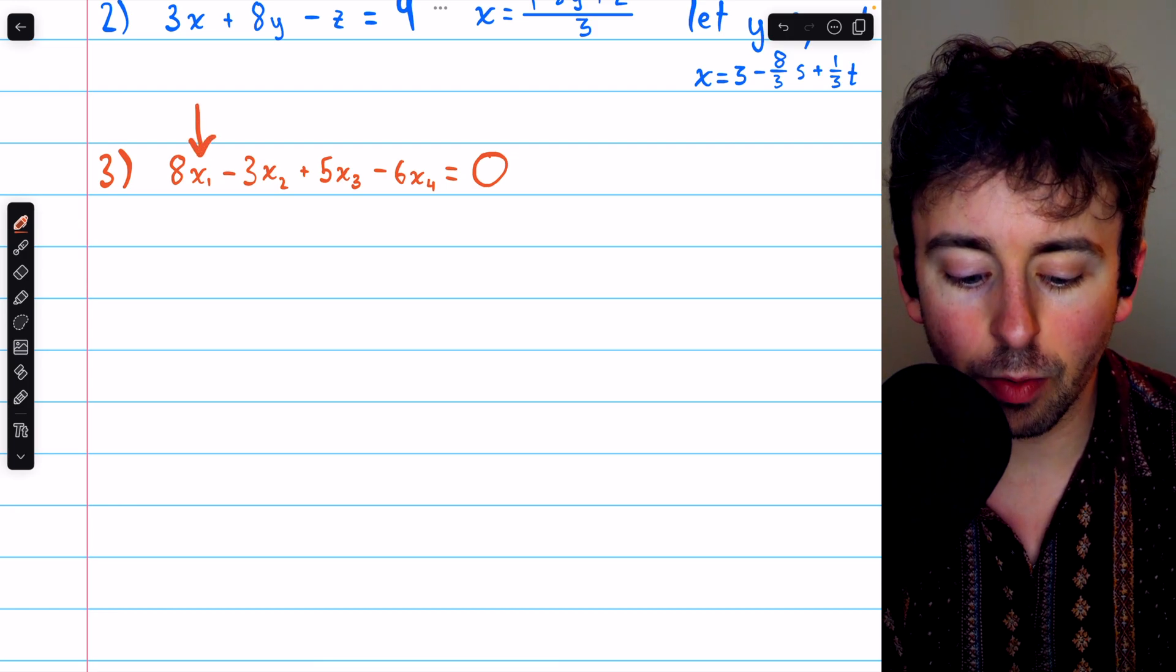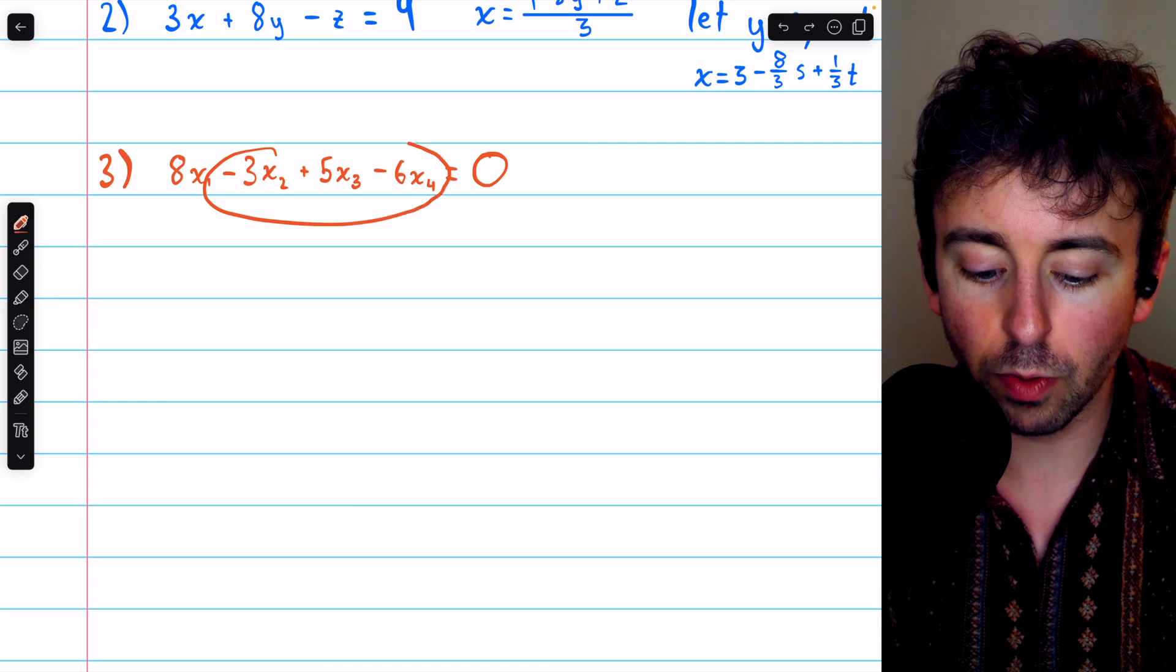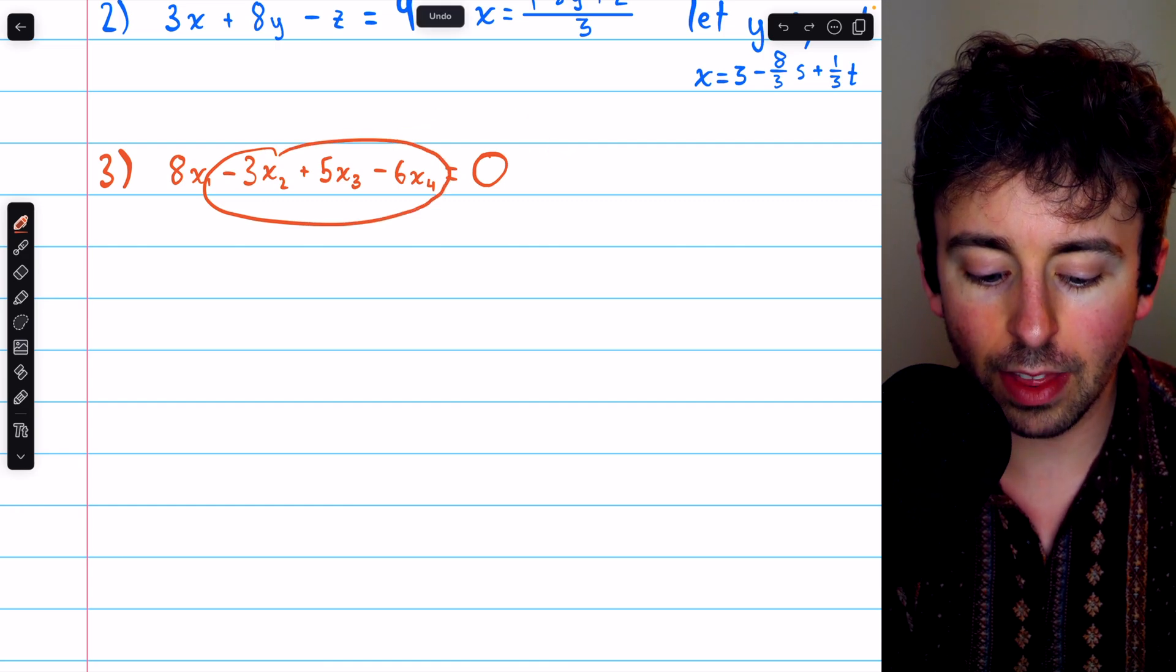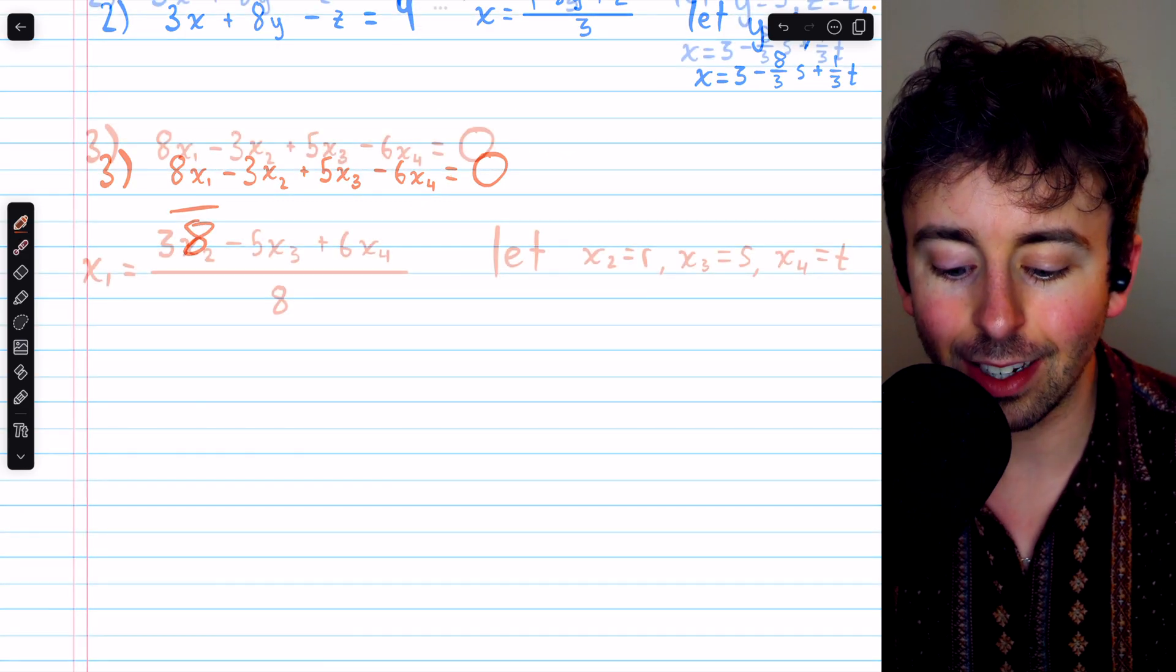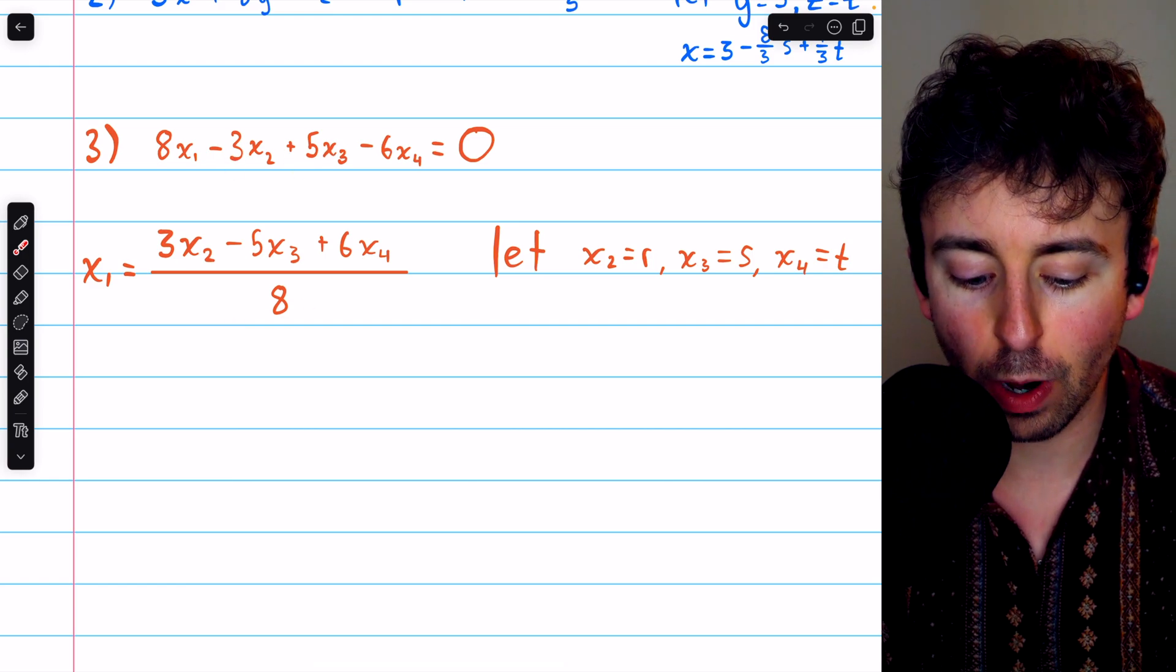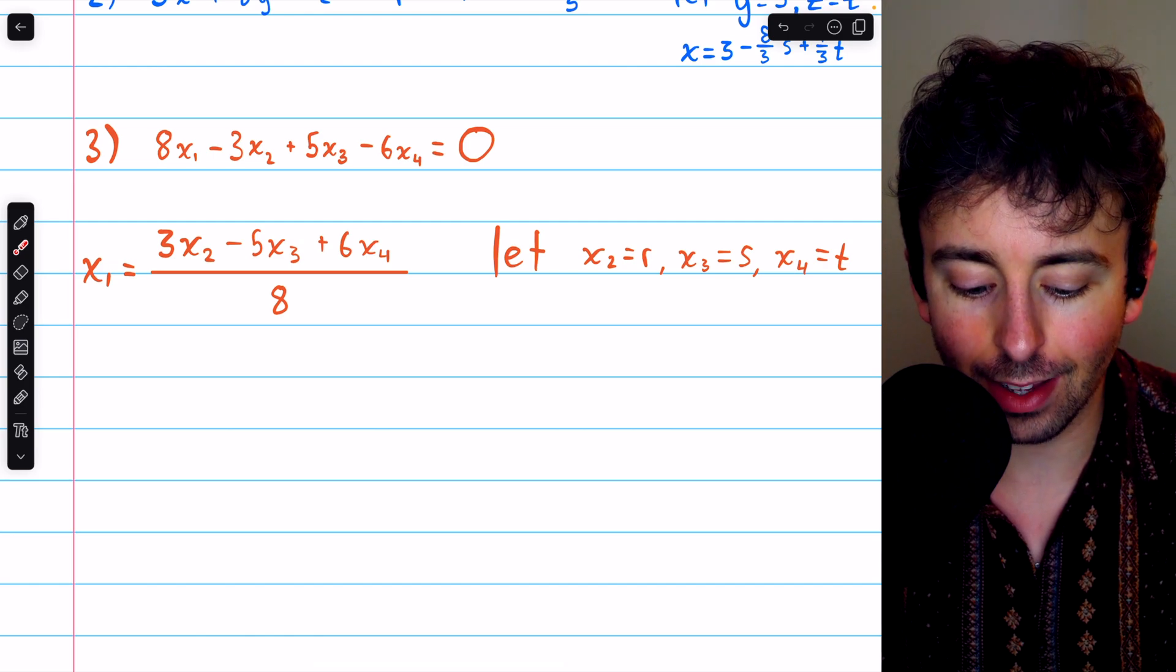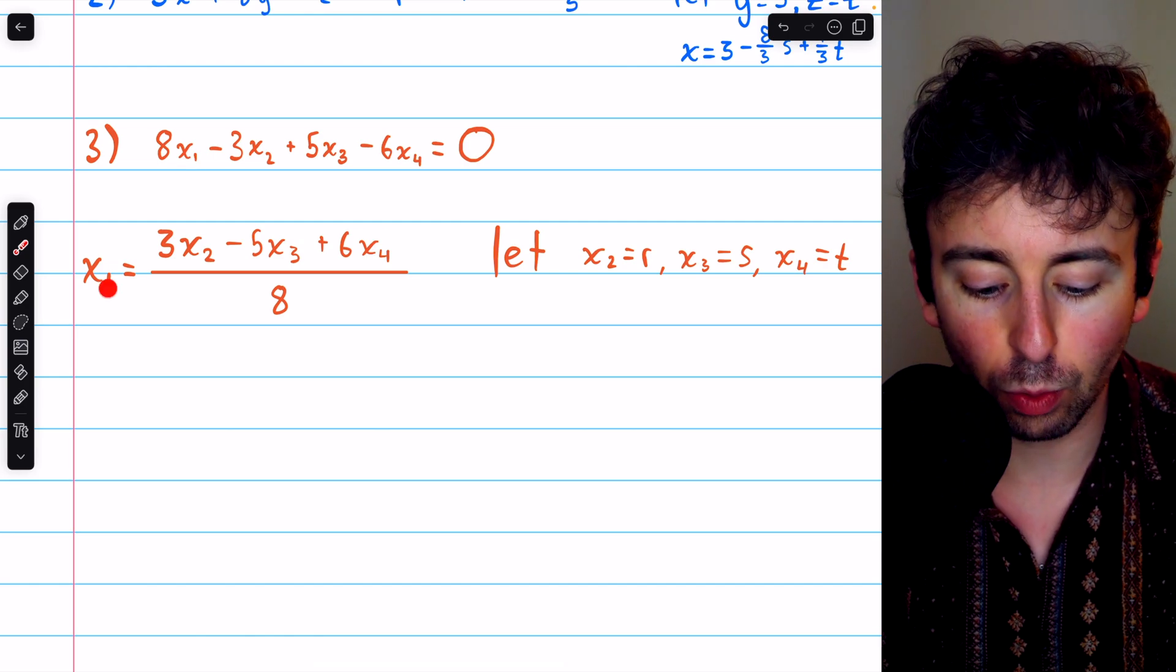We're going to begin by solving for x1, the leading variable, which will require us to move all of this junk to the right side, and then we'll divide everything by 8. And that looks like this. Add 3x2 to both sides, subtract 5x3 from both sides, and add 6x4 to both sides, and then divide by 8 to get x1 by itself.